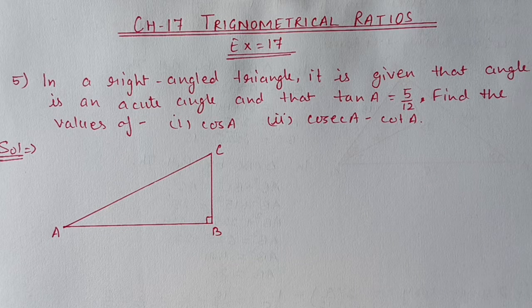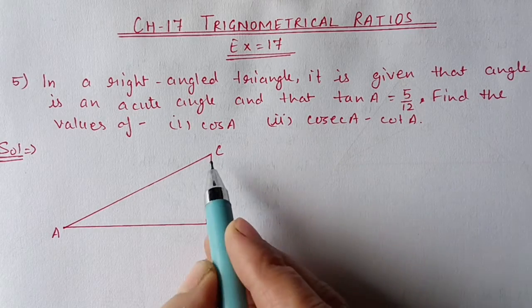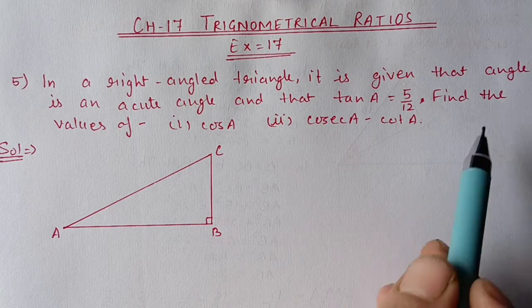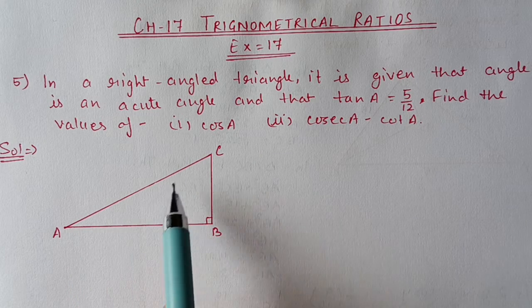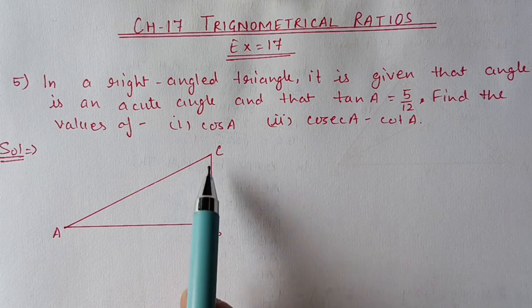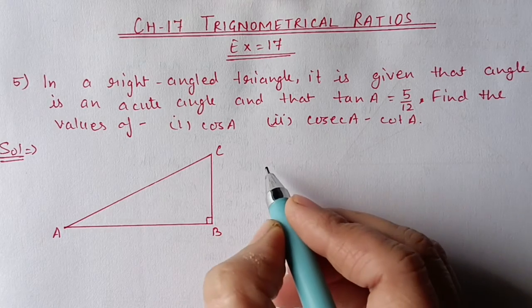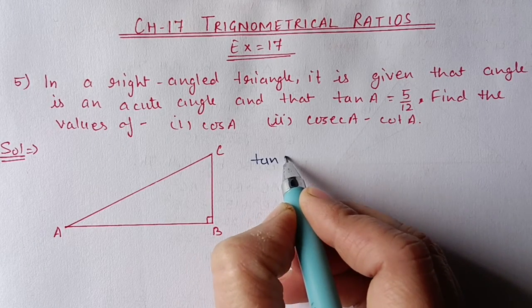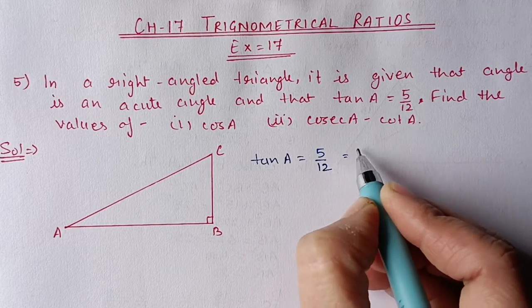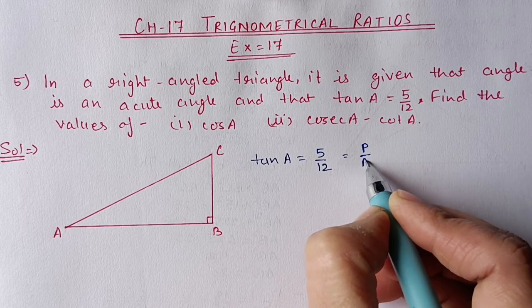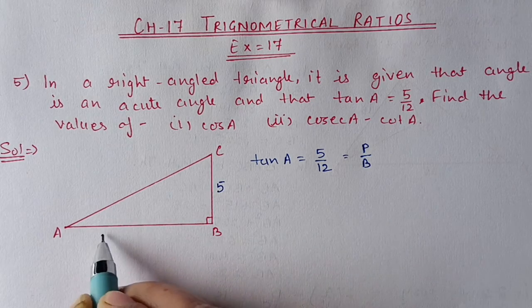We also need to find cosec A minus cot A. First, we start from the given: this triangle is a right angle triangle and angle A is an acute angle. The rest — any one angle you can take as 90 degrees, so I have taken B as 90 degrees. It is given tan A is equal to 5 by 12. Tan is perpendicular by base, so perpendicular is 5 and base is 12.